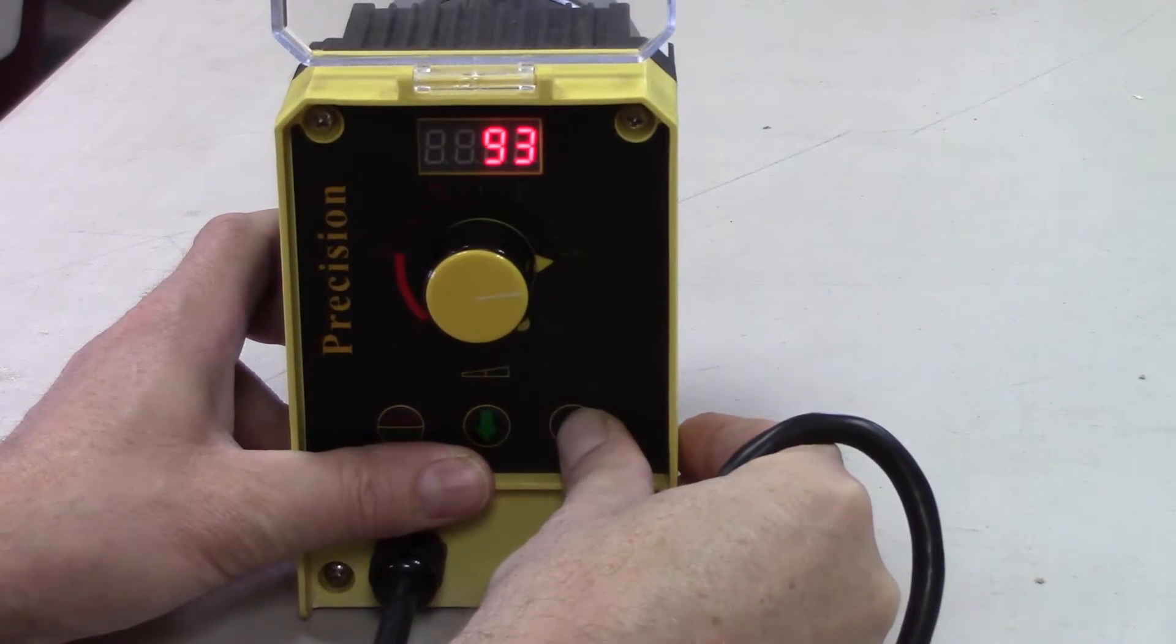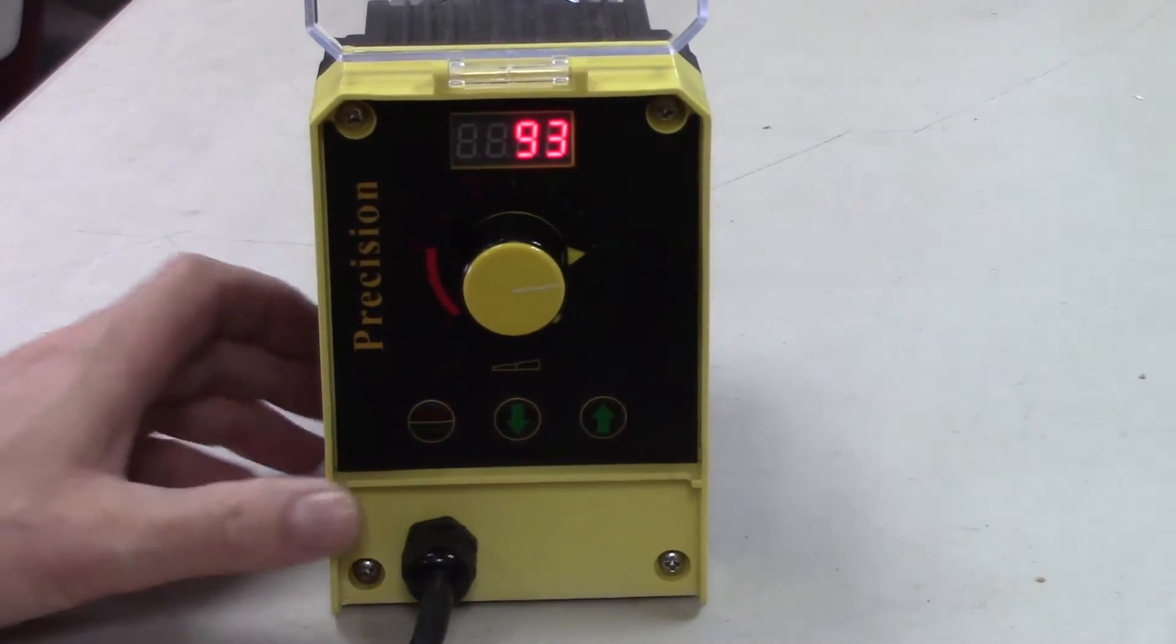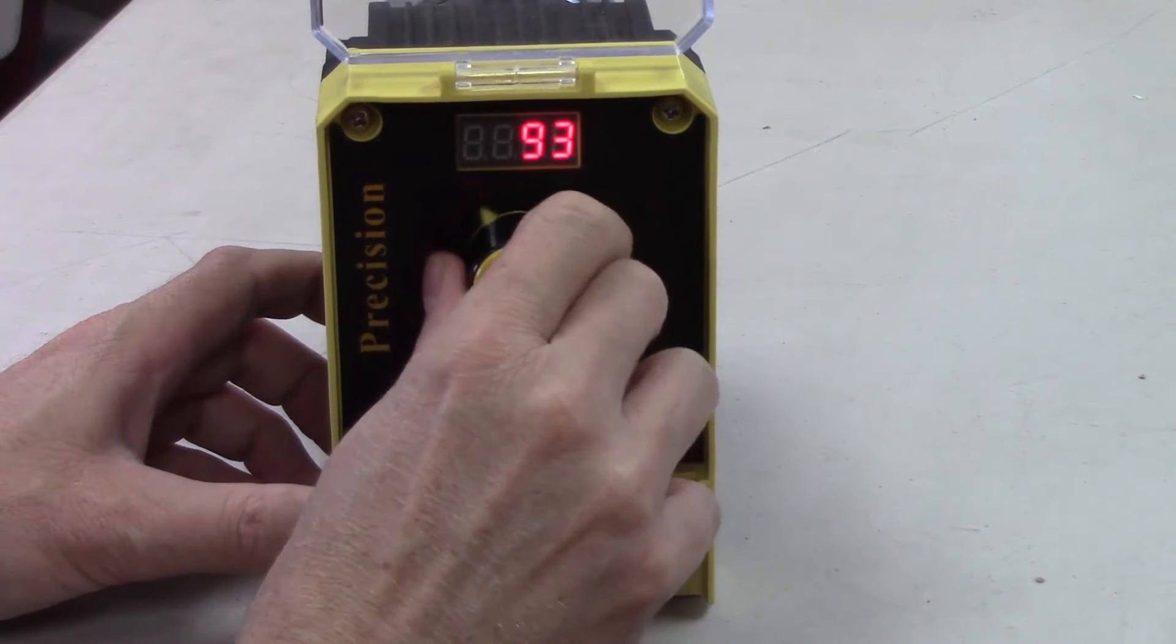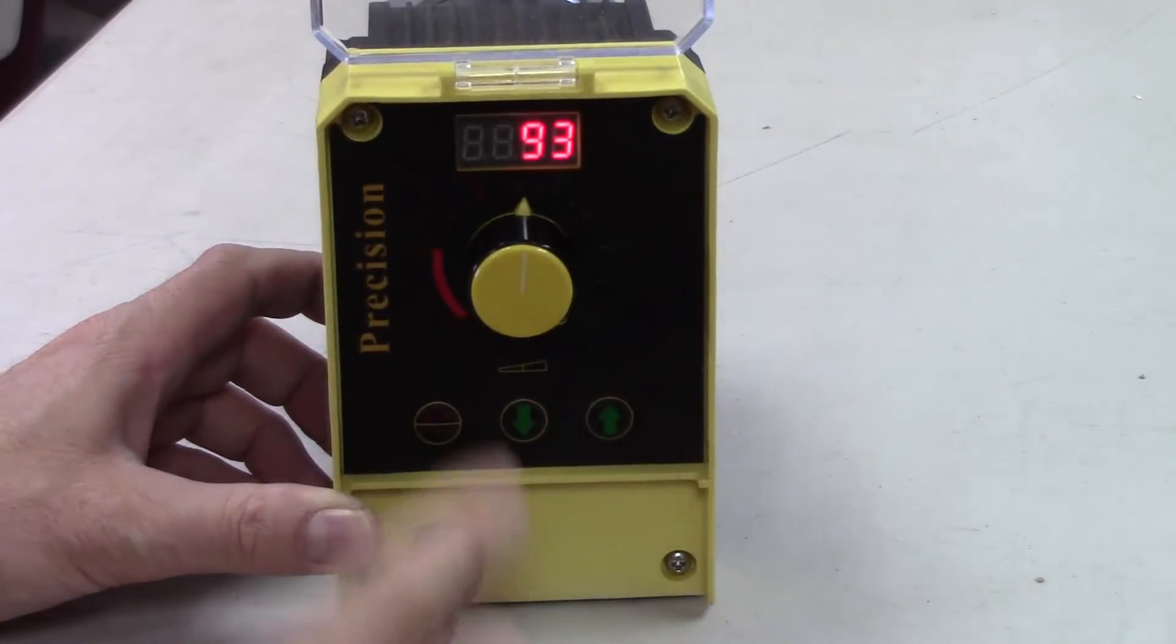When you're adjusting the stroke knob, when you're adjusting it up and down, it's real important that you only do so while the pump is pumping. Don't do it when it's not pumping.